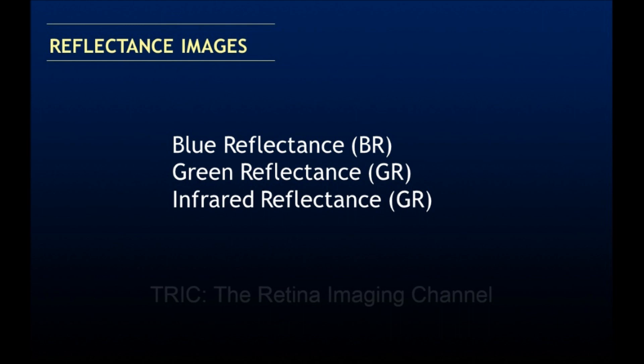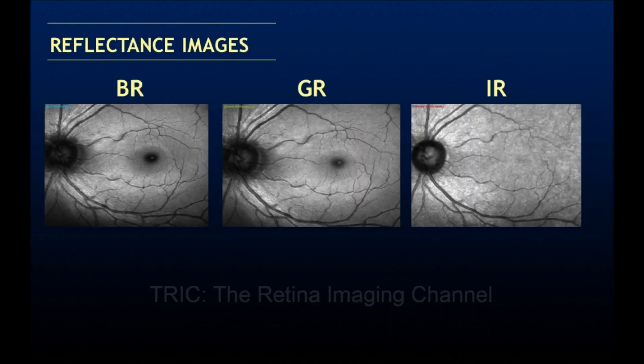Blue, green, and infrared reflectance images are obtained with their respective laser channels. It is difficult to differentiate a normal blue reflectance image from a green reflectance image unless they are labeled, because they look similar — both are shiny and show the foveal dip. The infrared reflectance image can be differentiated from the other two because it appears granular and does not show the foveal dip.